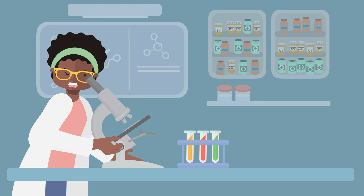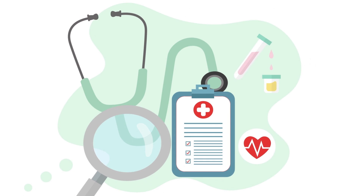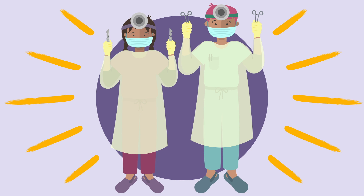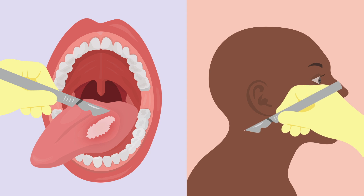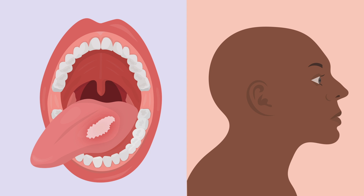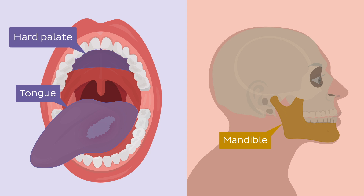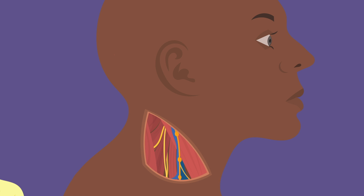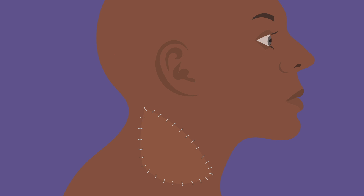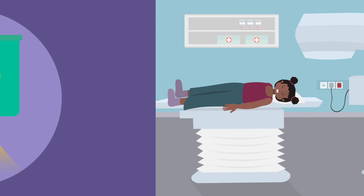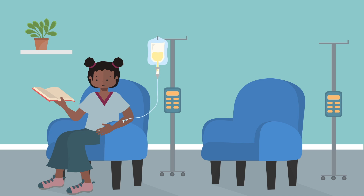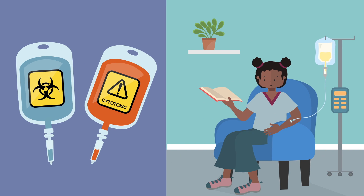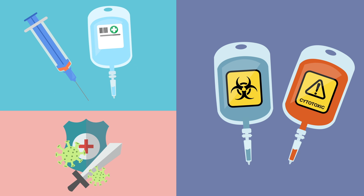The treatment for oral cancer depends on the type of cancer, its staging, and the patient's age and general health. The main form of treatment is surgery. Usually the tumour is removed through the mouth or through an incision in the neck. Some parts of the mouth and adjacent structures might also be removed, such as the tongue, the mandible, and the hard palate, which forms the roof of the mouth. If lymph nodes of the neck are affected, it might be necessary to remove them through a procedure called neck dissection. Reconstruction surgeries might also be needed. Besides surgery, some patients can benefit from radiation therapy, chemotherapy, or immunotherapy, which engages your immune system to attack the malignant cells.